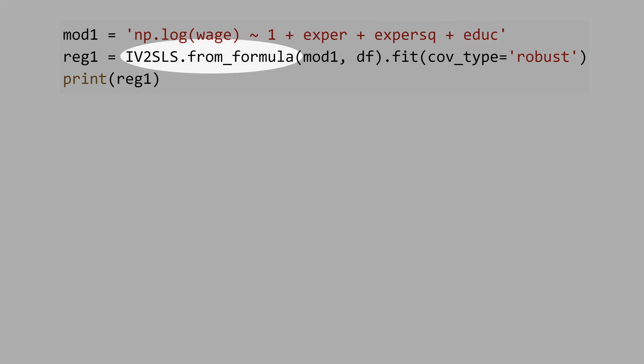and education. We use the command IV two-step least square from formula, and you pass model1 in data frame. We have to fit the model, and for covariance type, we choose robust to heteroskedasticity.